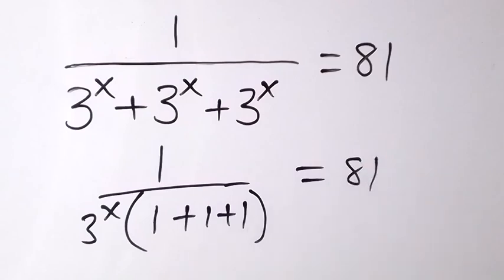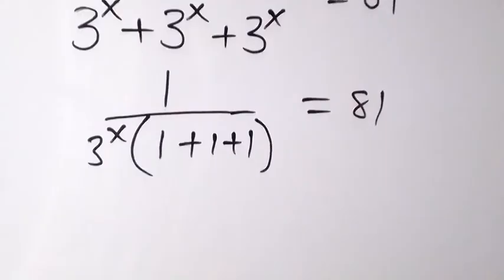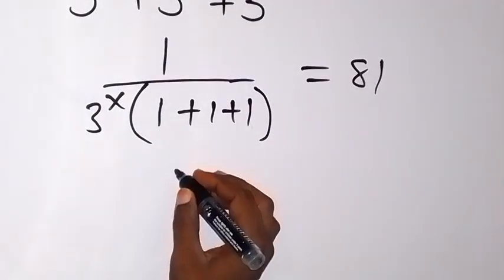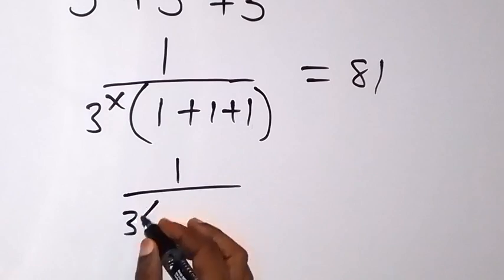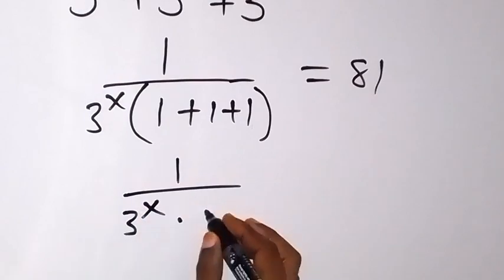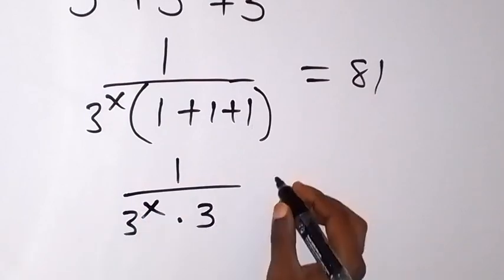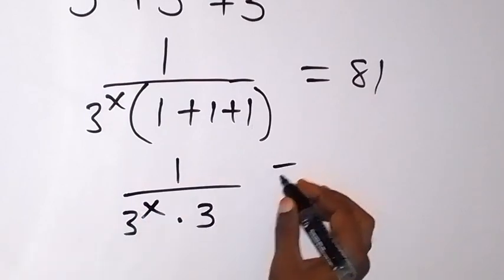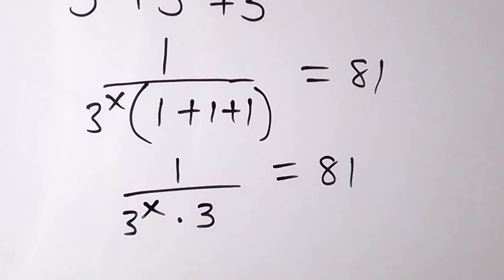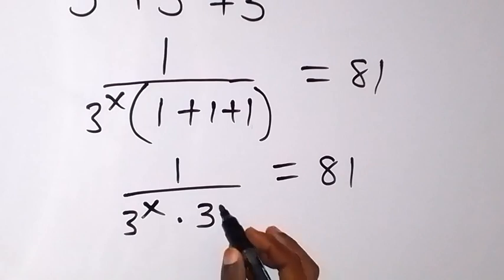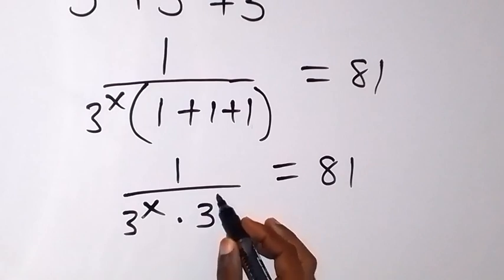Now, from here, 1 plus 1 plus 1 gives us 3. So we have 1 over 3 raised to power x, then times 3, which will be equal to 81.